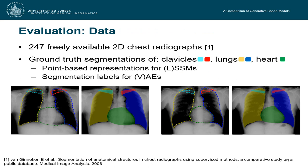We tested those four methods on freely available 2D chest radiographs. They all had ground truth segmentations of five structures, both clavicles, both lungs and the heart, which were described by point-based representations that we used for the shape models and also generated segmentation labels for the autoencoding models. To be fair against all methods, we evaluated in terms of contour-based distances, which were extracted from the points or from the labels.